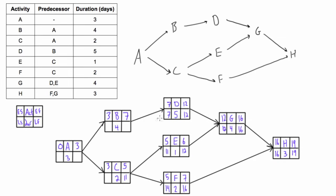For B there's only one arrow leading out, so we bring the seven in and seven minus four is three for B's late start. For C: eleven minus two is nine. Now for A's late finish, we take the smaller of the competing values — either three from B or nine from C — so we use three. Then three minus three is zero for A's late start.